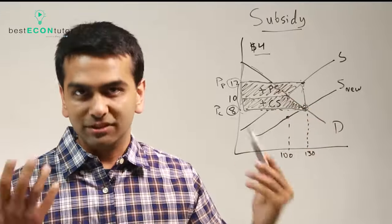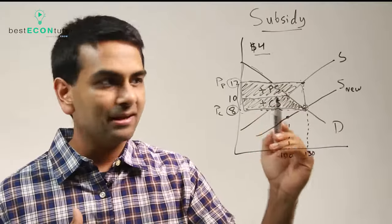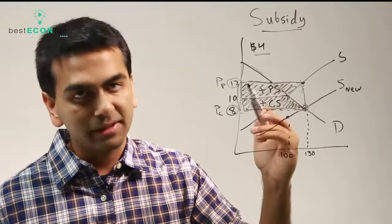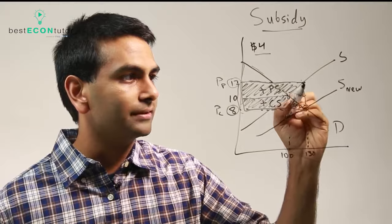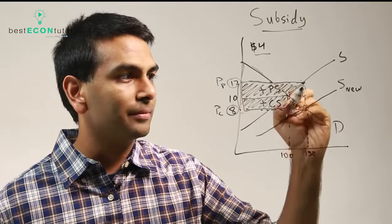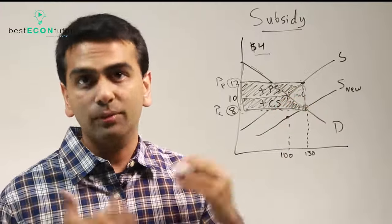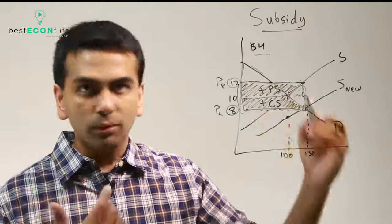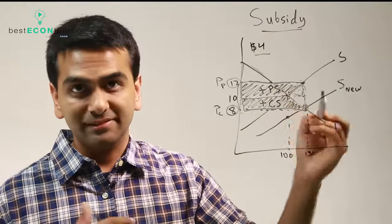So overall, with the subsidy, we gain this much for PS, this much for CS, but we lose even more than that. Specifically, this triangle—that's how much more we lose. That's how much the deadweight loss is, because overall, when the subsidy is implemented, total surplus is that much less than before.